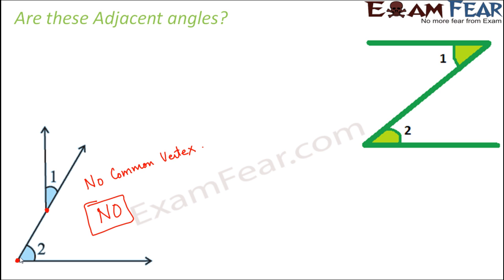For the next example — are these adjacent angles? Not again, because when you look at angle 1, its vertex is here, and the vertex of angle 2 is here. So they do not have a common vertex, and therefore here also these are not adjacent angles.